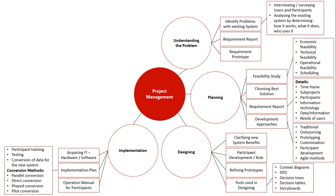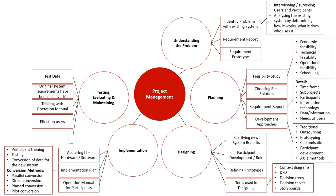After full implementation, we do the final stage: testing, evaluating, and maintaining. We check that the system is working properly and has achieved what we set out to do, ensuring it meets all requirements from our requirements report. We use the operations manual to verify the system solves problems and directs users correctly. We also look at the effect on users and how to modify the system if issues arise. Types of tests include volume data tests (how much can be packed into the system), simulated data tests (likely user data to see how the system reacts), and live data tests (actual real data going into the system).